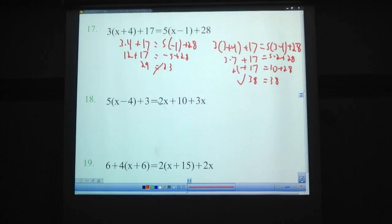Let's try out number 18. Put in some numbers, let's go with a 1 first. 5 times 1 minus 4 plus 3 equals 2 times 1 plus 10 plus 3 times 1. 1 minus 4, that's negative 3, so 5 times negative 3 plus 3. 5 times negative 3, that's negative 15, plus 3, negative 12. Over here, 2 plus 10 plus 3, 15. So, it could be one solution, it could be no solutions. If you look at this, these are 27 apart, so when you put in another number, it better be 27 apart, there's going to be no solution.